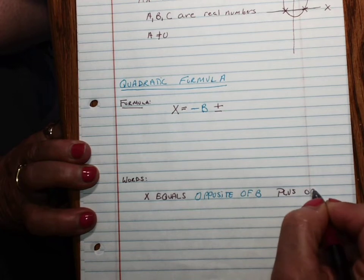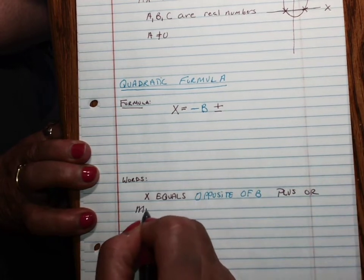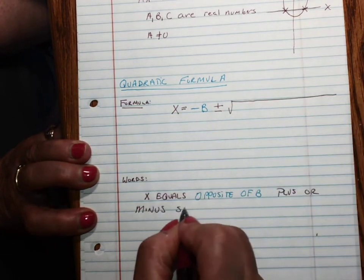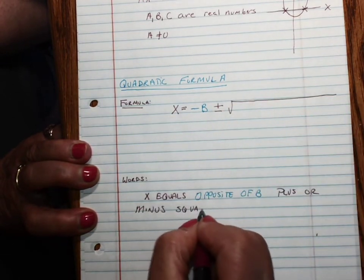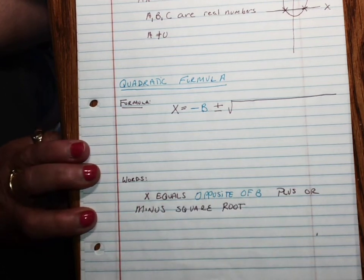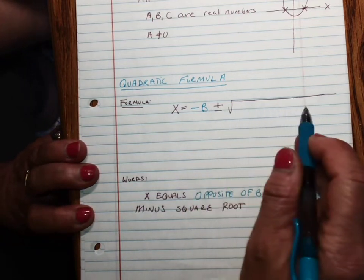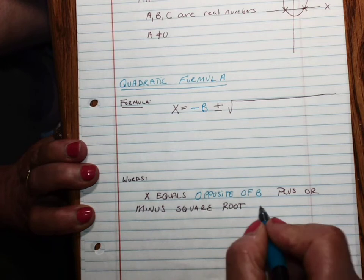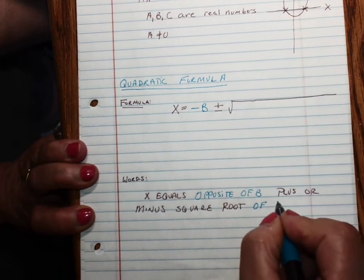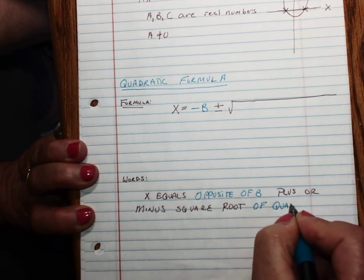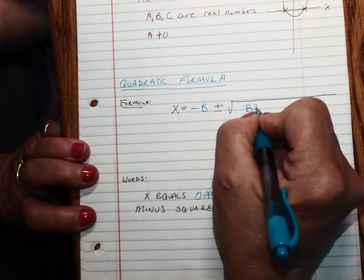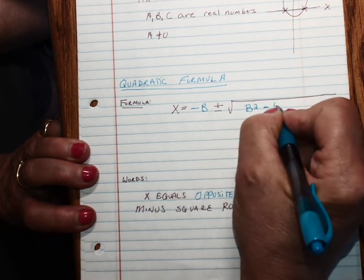Plus or minus the square root, and we're going to take the square root of everything that's underneath here. So it's the square root of the quantity b squared minus 4ac.